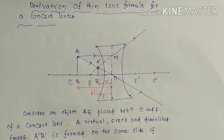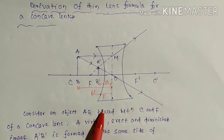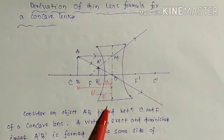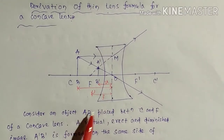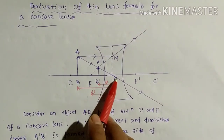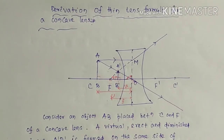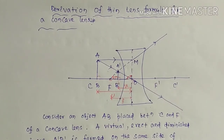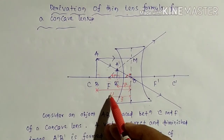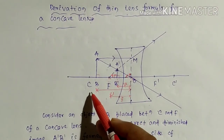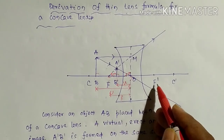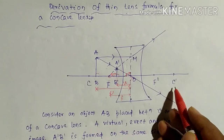I have taken a concave lens. For a concave lens, this is the optical center. We know that a lens has two principal foci and two centers of curvature. Here I have taken this focus as F and this as C, and this focus as F' and this as C'.